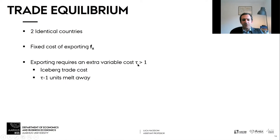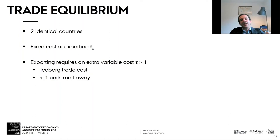There's also an extra variable cost denoted by tau — the so-called iceberg trade cost. If you want to sell one unit of output abroad, you have to ship tau units of output. Tau minus one units melt away so that once the product reaches the destination it arrives as one unit. This is simply a multiplicative cost, so your costs when you export are no longer wage over productivity, but wage divided by productivity times tau.